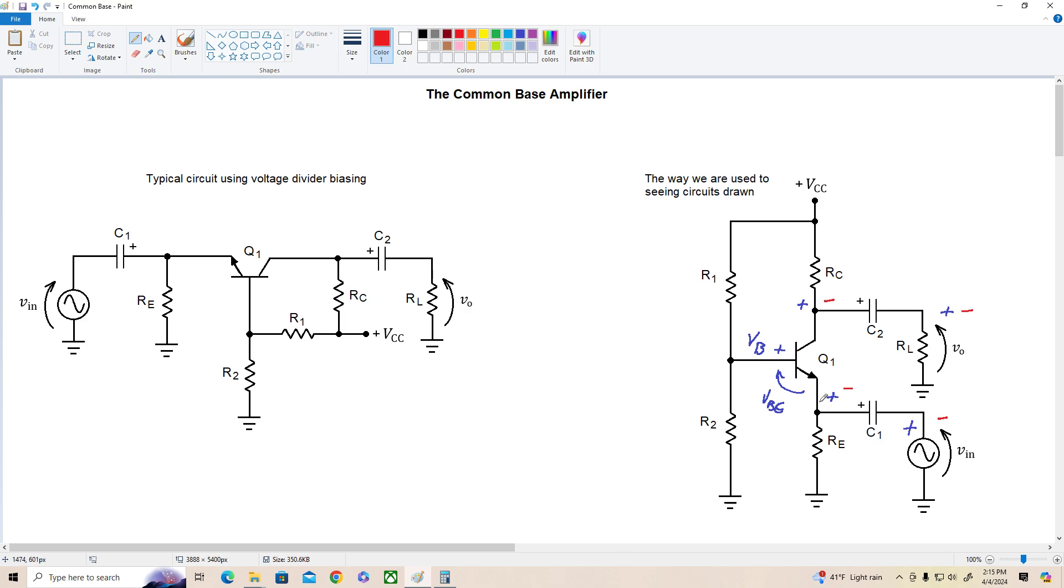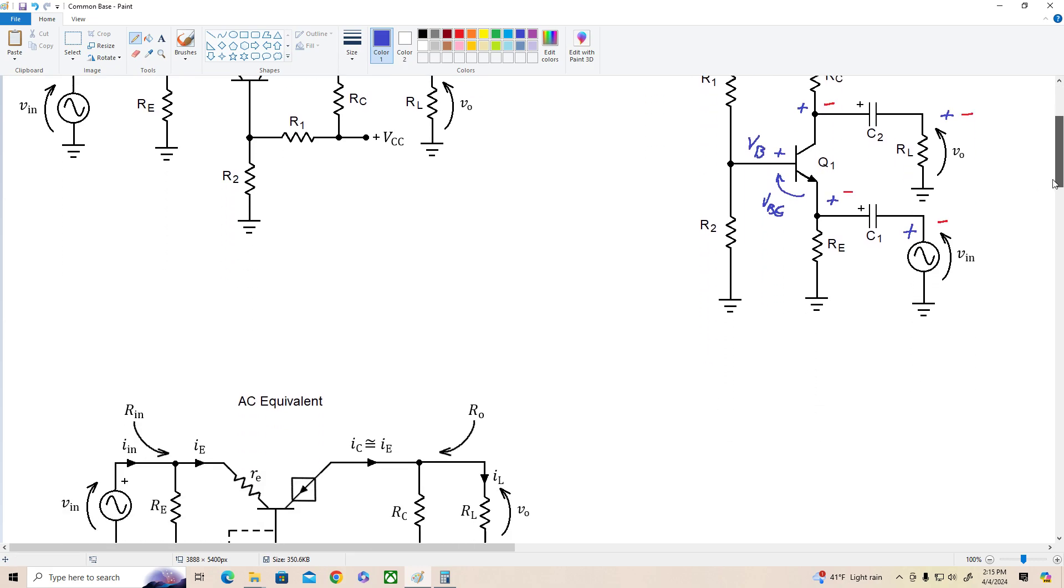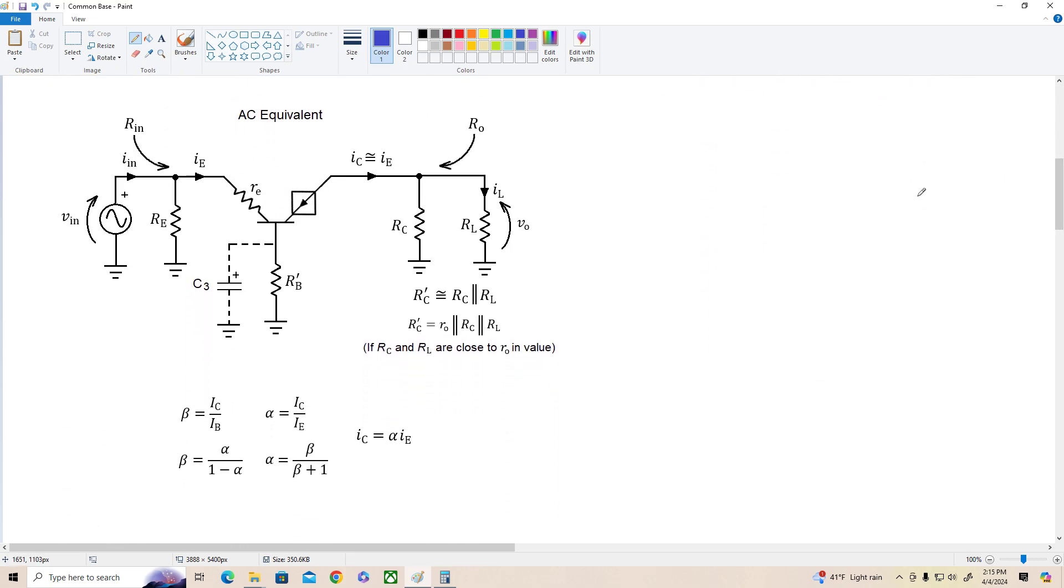Now hopefully this gives you a little bit of an intuitive understanding of what's going on here, because it's not always clear looking at the AC equivalent, and that's what we're going to do next. So here's the AC equivalent for the circuit, and notice that I've included the option for a bypass cap on the base resistor. We're going to look at it from both perspectives right now, but first let's look at the input resistance.